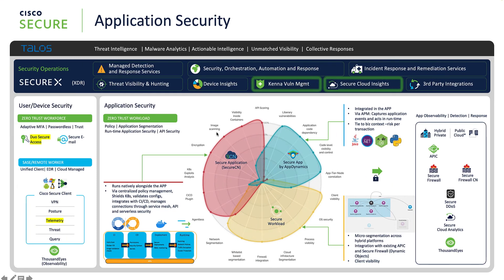These are the solutions I wanted to cover in a nutshell. Talos feeds threat intelligence into all of these solutions — they have unmatched visibility, and all solutions both consume and contribute to the same threat intelligence in the cloud. There are also additional solutions listed, like ThousandEyes, which goes from users all the way up to the application stack, helping manage application performance, user experience, troubleshooting, and pinpointing exactly where problems are. I hope you find this framework helpful for finding the right solution for your use cases. If you have any questions, feel free to reach out. Thank you so much.